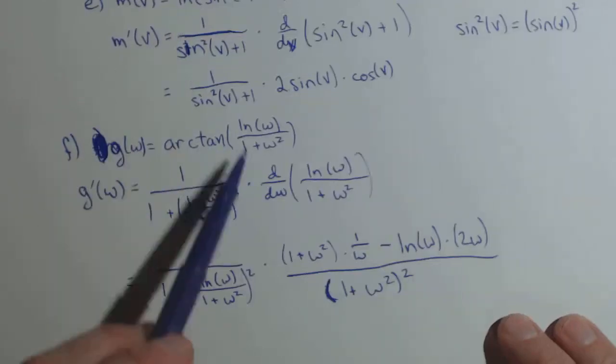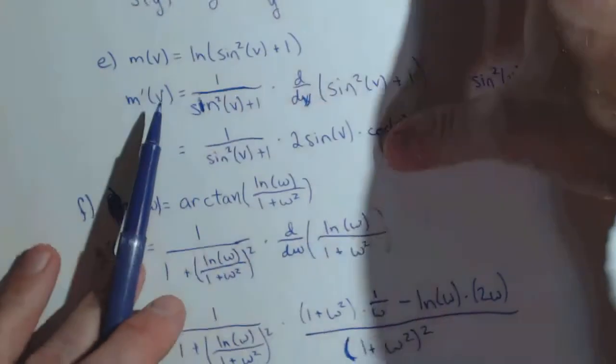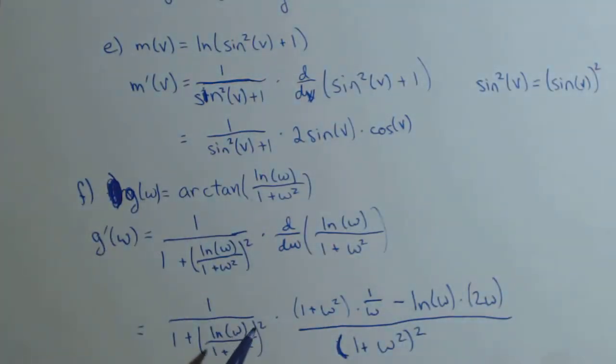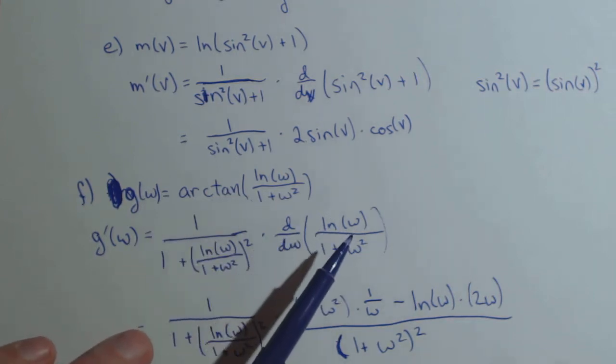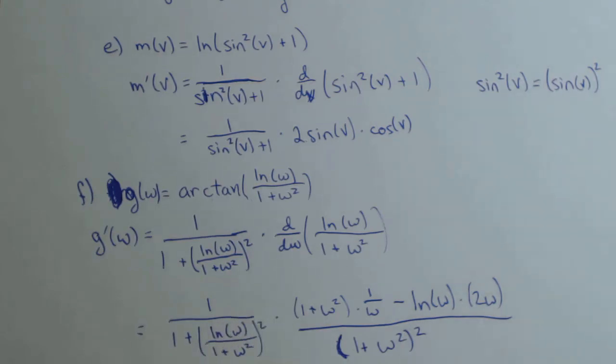So I set up my derivative according to the chain rule, and then I kept track of what I still needed to take the derivative of.